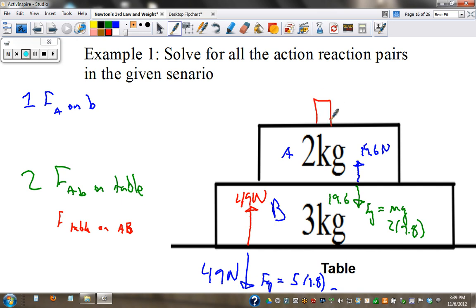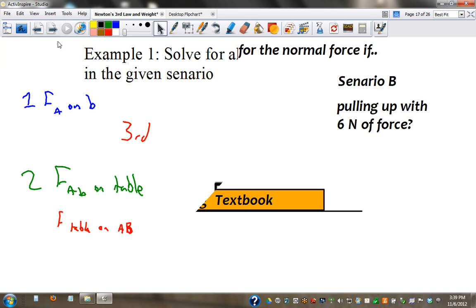And if we stacked something else, there would be a little one here, a medium one here, and a big one there. Any time there's objects interacting, we have action-reaction pairs. Newton's third law. For every action, there's an equal and opposite reaction.